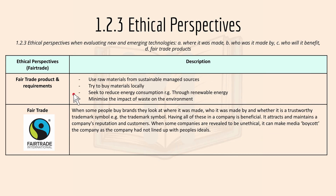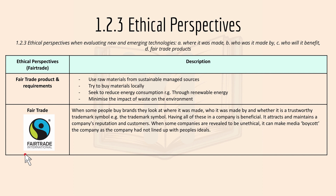For fair trade products and requirements: they use raw materials from sustainably managed sources, try to buy materials locally, seek to reduce energy consumption through renewable energy, and minimize the impacts of waste on the environment. When some people buy brands, they look at where it was made, who it was made by, and whether it has a trustworthy trademark symbol. Having all of these is beneficial because it attracts and maintains a company's reputation and customers. When companies are revealed to be unethical, people can make it public in the media and boycott the company. Fair trade is essentially the idea of fair pay for labor and being sustainable.